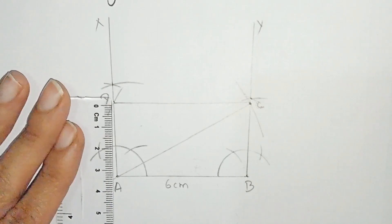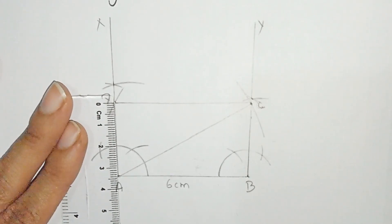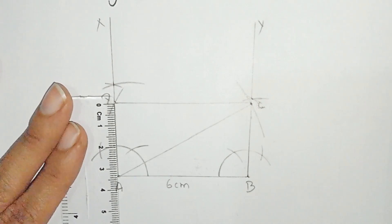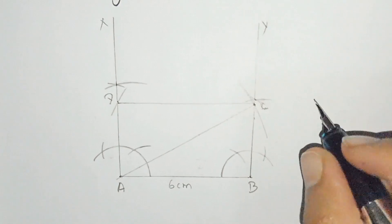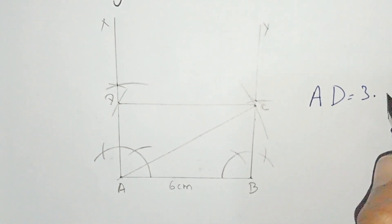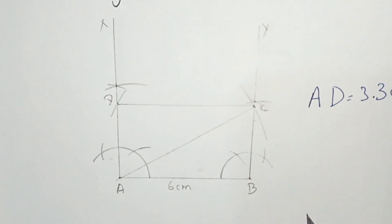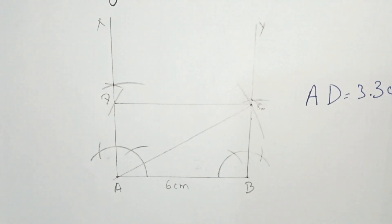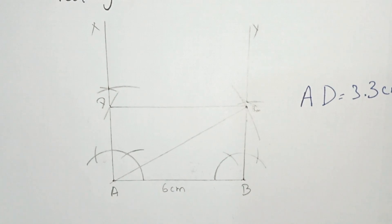The breadth of the rectangle — AD is equal to 3.3 centimeters. Question number 13 is solved. I hope you understood these questions very well. Thank you very much for watching. Take care of yourself.